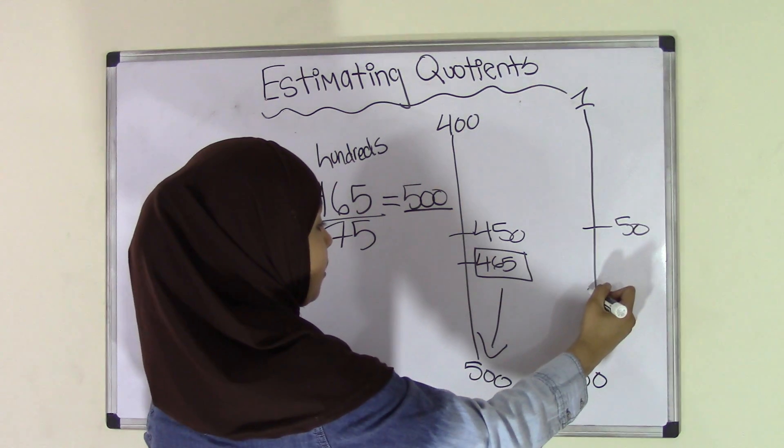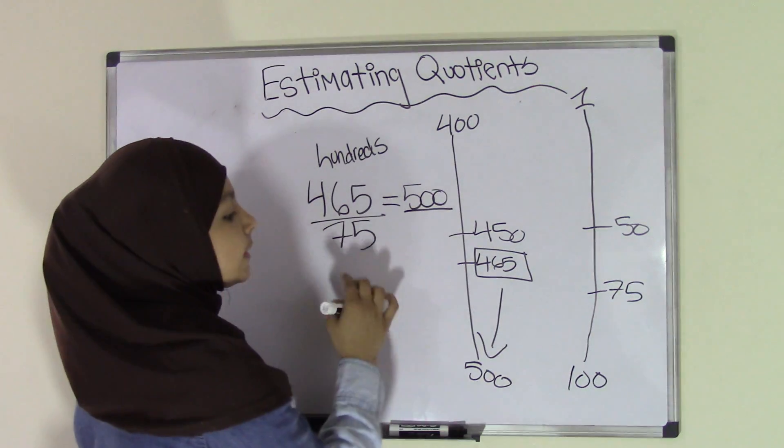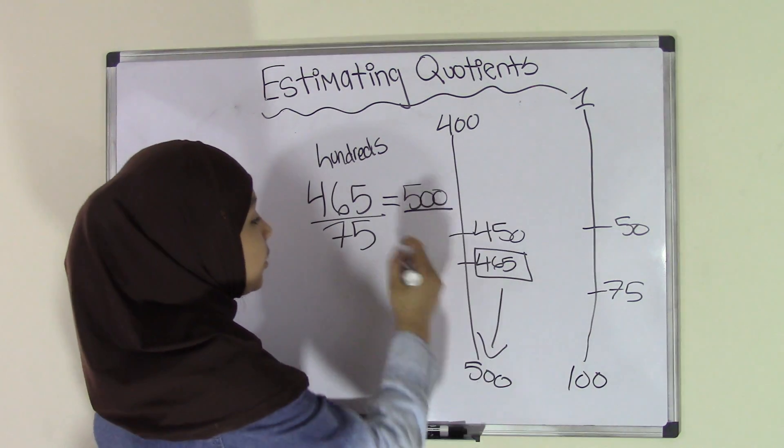So we're going to put 75 over here. That means that 75 is closer to 100. So therefore, now our new estimated problem would be 500 over 100.